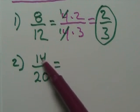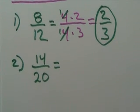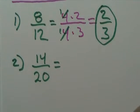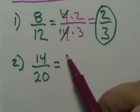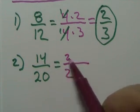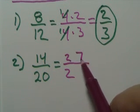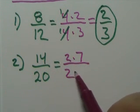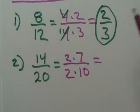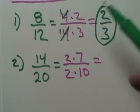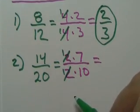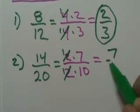Here's example two. We're trying to reduce this to simplest form. So 14 and 20 — is there a number that will go into both of them? The largest number you can think of. How about the number two? Two will go into both 14 and 20. Two times seven is 14, two times 10 is 20. Two will go into both of these once and once, so you're just left with seven over 10.